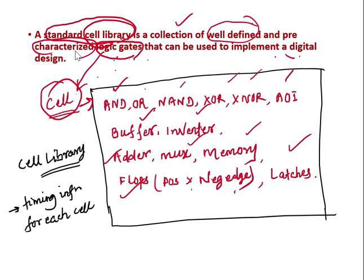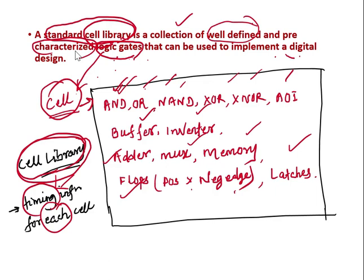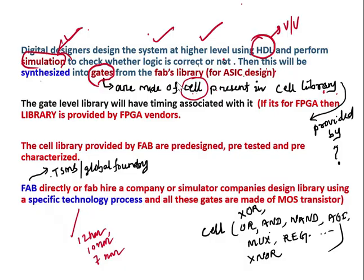The cell library also provides timing information for each cell. All cells inside the cell library are associated with some timing information. So whatever basic gates or components are present in the cell library also provide timing information.